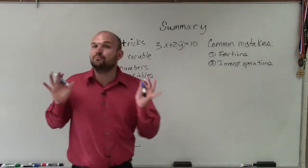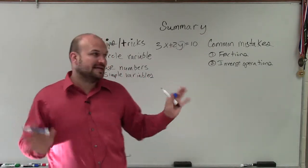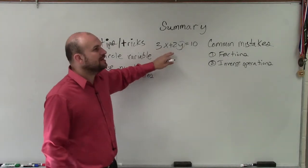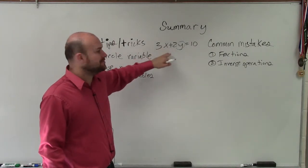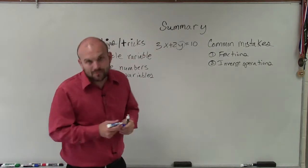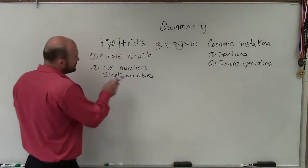That means by circling, you are not going to move that variable anymore. You're going to keep it right there. And now all you're simply going to do is undo everything that's happened to the variable, which is being added by 3x and being multiplied by 2. The next thing is use numbers or simple variables.